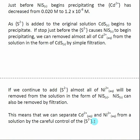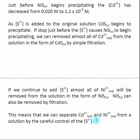Here's how the full procedure looks: we start with a solution containing Ni²⁺ and Cd²⁺ and begin adding S²⁻. Cadmium sulfide starts to precipitate out, and we keep adding S²⁻ until we reach the edge of nickel sulfide formation — that's when we stop, as it's the most Cd²⁺ we can remove. We filter off the cadmium sulfide, leaving Ni²⁺ in solution. Then we continue adding S²⁻, the nickel precipitates out as nickel sulfide, and we filter that off too. In effect, we've separated and removed both Cd²⁺ and Ni²⁺ from solution by carefully controlling the concentration of S²⁻.